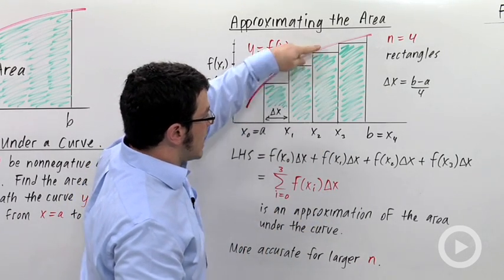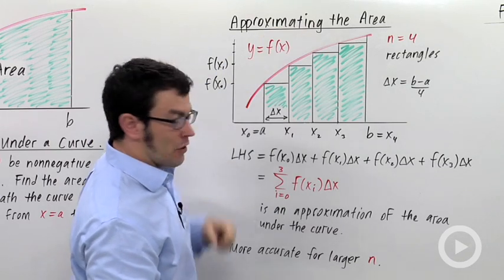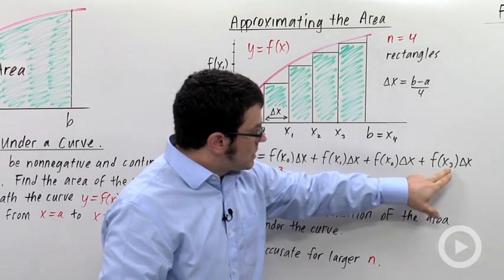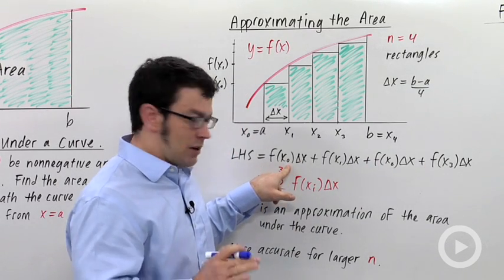So the height of this rectangle will be f of this value, where the rectangle touches the curve. We sum from 0 to 3. There are four rectangles here, but we're summing from 0 to 3. That's a little confusing.